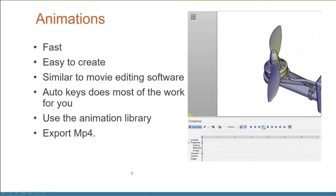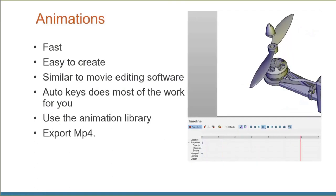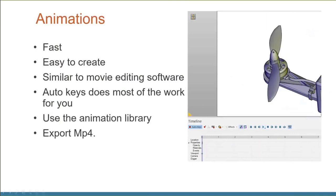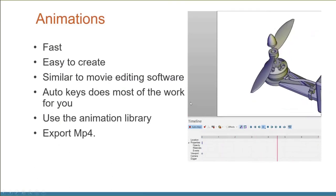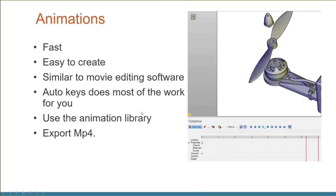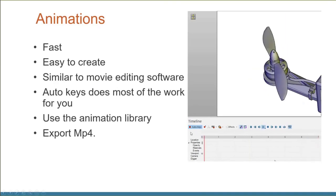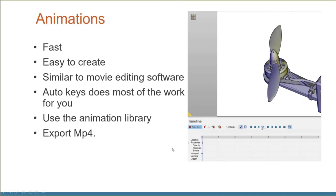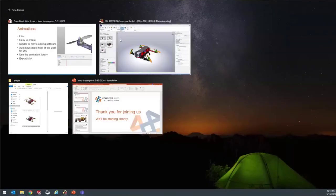Images are the low-hanging fruit of Composer — once you've built that workflow, you get your return on investment quickly. Our next category is animations. Although it might seem complicated, it's actually even simpler than creating images. Animations are easy to create, similar to movie editing software like Camtasia, Windows Movie Maker, or iMovie. Auto Keys does most of the work for you, there's a built-in library of animations, and new for Composer is the ability to export directly to MP4 files.